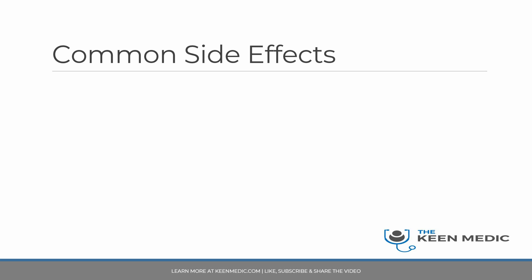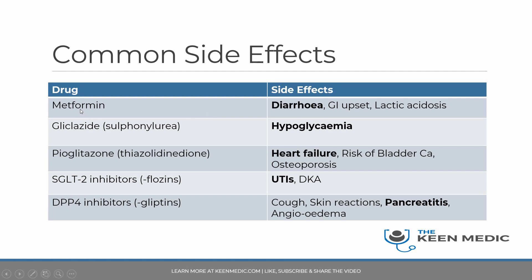Now let's cover common side effects. For metformin, the most common side effect by far is diarrhea. Metformin is commonly started as the immediate-release preparation, and if a patient develops diarrhea, you can suggest switching to the slow-release preparation, which can often relieve the symptoms. Gastrointestinal upset in general can also occur. There is also a risk of lactic acidosis, especially in patients who are septic or have renal failure — which is why metformin should be avoided in renal failure.